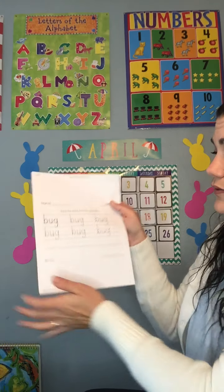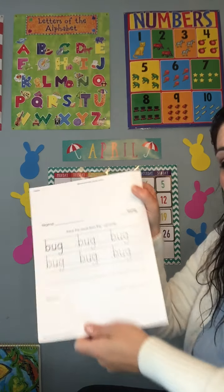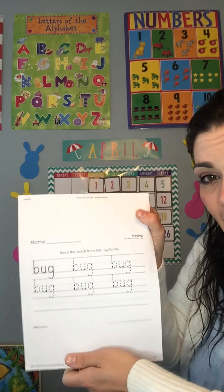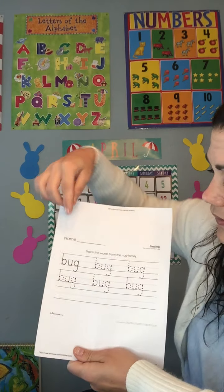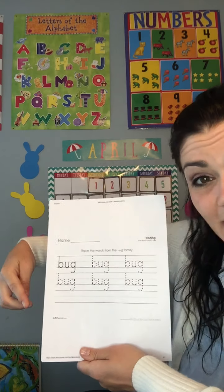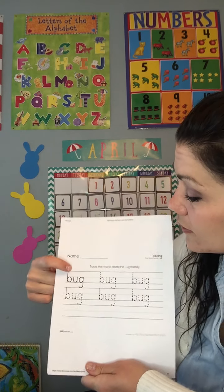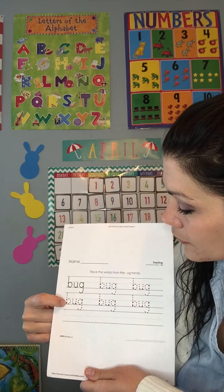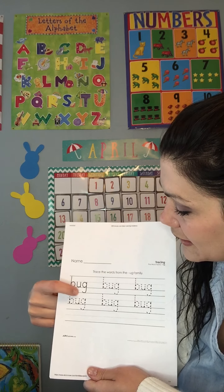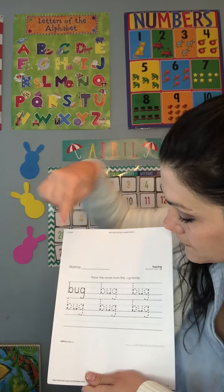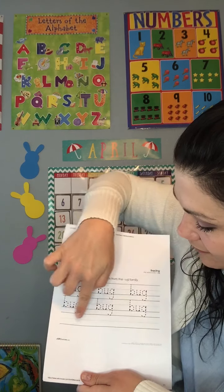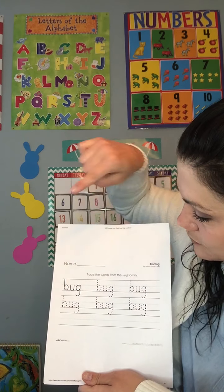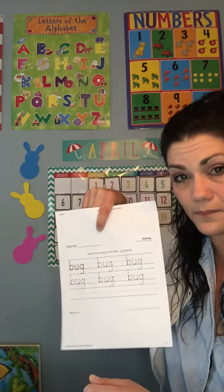We also have a tracing activity. If you don't have this paper, you can simply have mom, dad, or your older siblings dot out the word bug — B-U-G. You trace these words and then you write these words. And you always put your name on the top of your paper, so you can practice name writing.